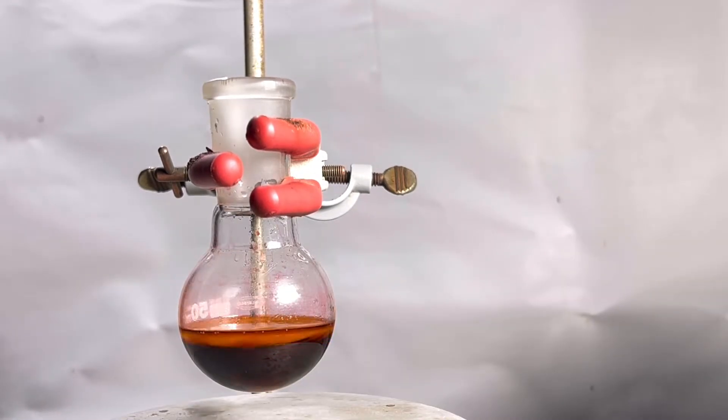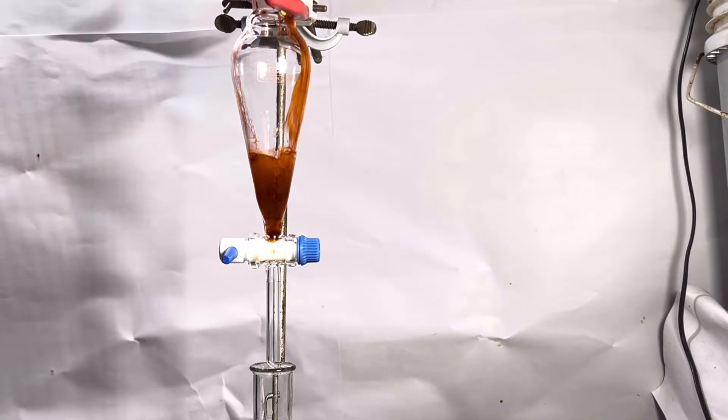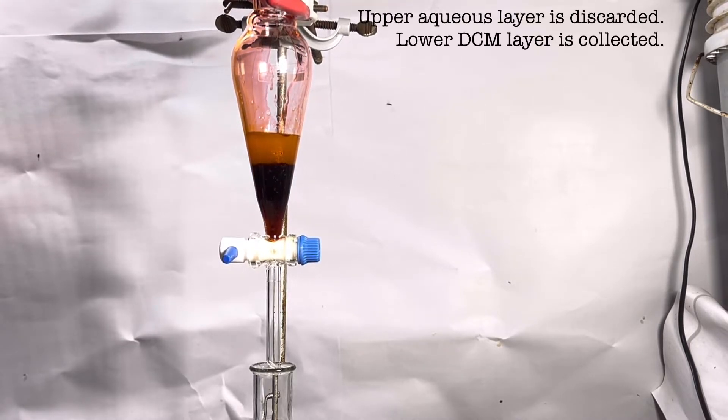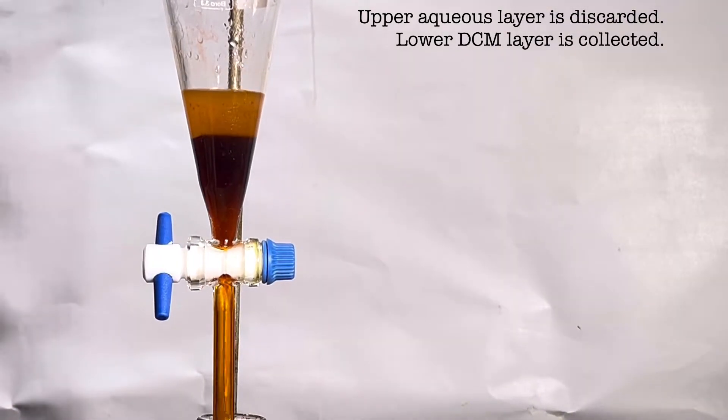After stirring for few minutes the contents of the round bottom flask was poured into a separatory funnel. You can clearly see the two layers. The upper layer is the aqueous part and it was discarded. The lower layer contains our desired product phenolphthalein. It was drained into a beaker.